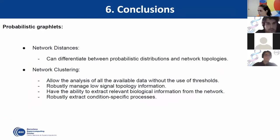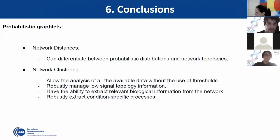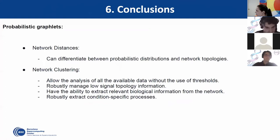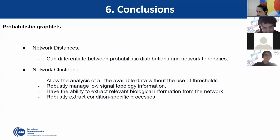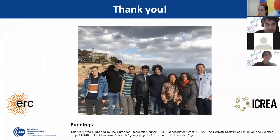In conclusion: for network distances, probabilistic graphlets can differentiate not only by network topologies but also by the probabilistic distribution of the edges. For network clustering, probabilistic graphlets allow analysis of all available data without using thresholds. They robustly extract low-signal information and provide the ability to extract relevant biological information from these networks. The information captured by probabilistic graphlets is highly linked with condition-specific processes, which is connected to the probabilistic nature of some interactions. Thank you.